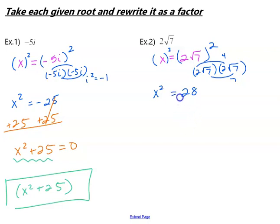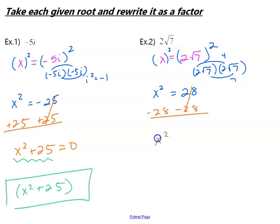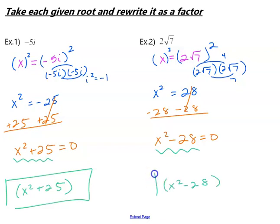Our next step: get one side equal to 0, keeping x squared positive. So let's subtract 28 to the other side. Then we have x squared minus 28 equals 0. We take our expression side, set it in parentheses. And this is our root of 2 root 7 turned into a factor.